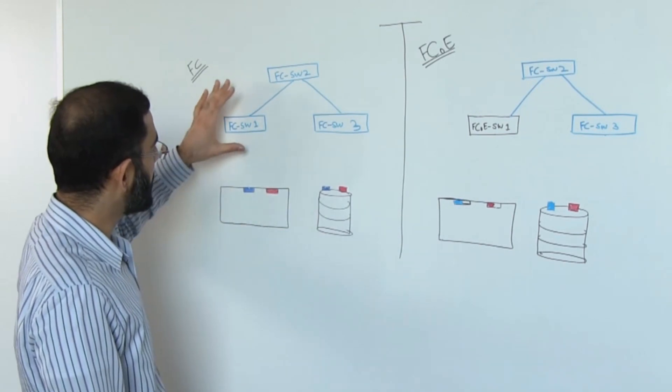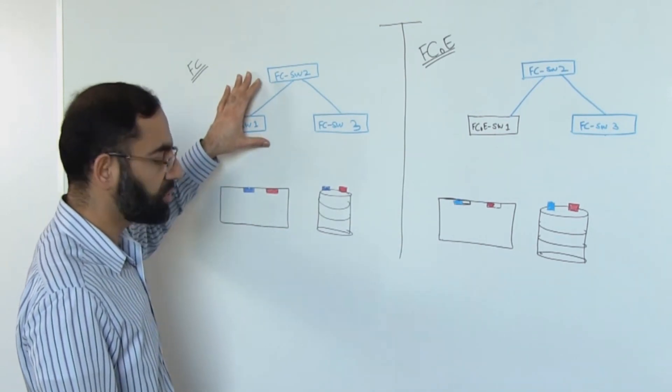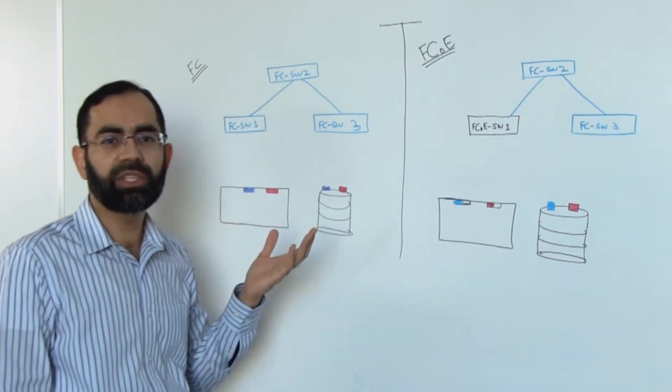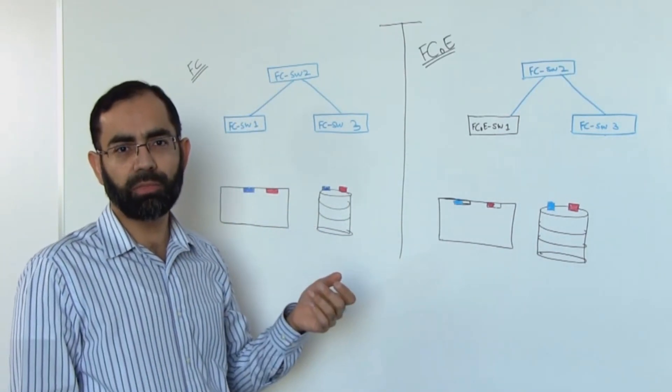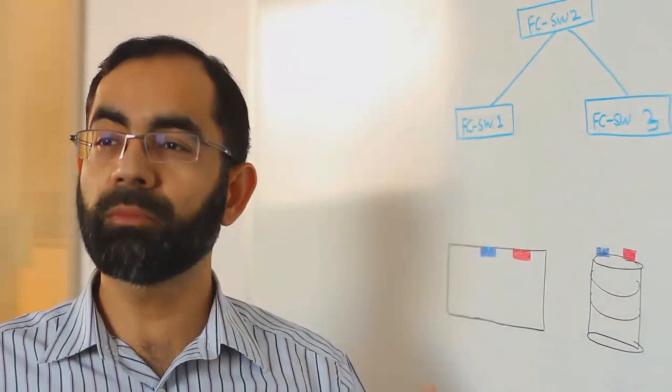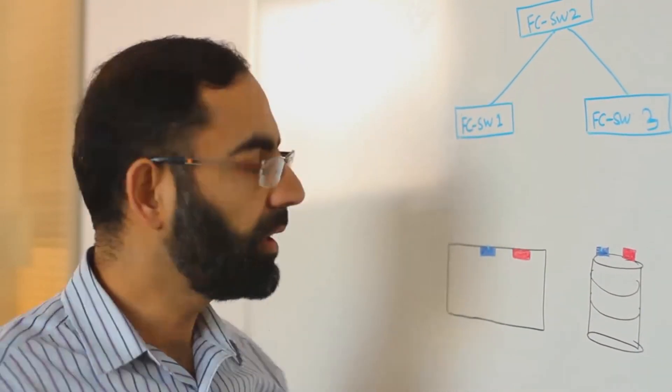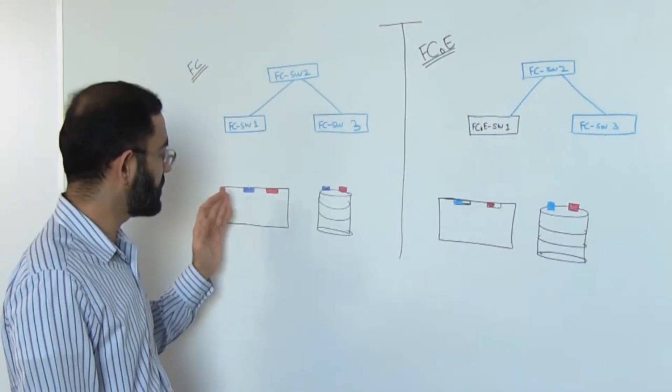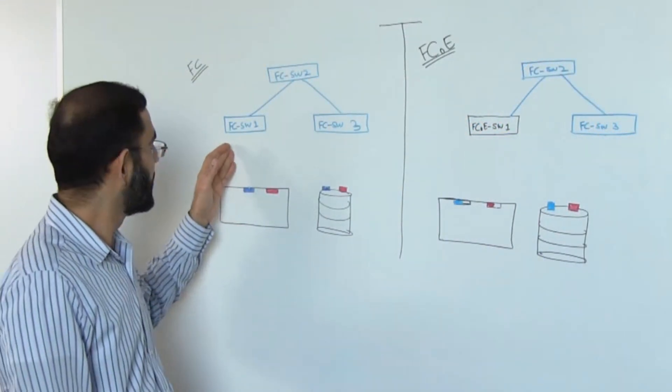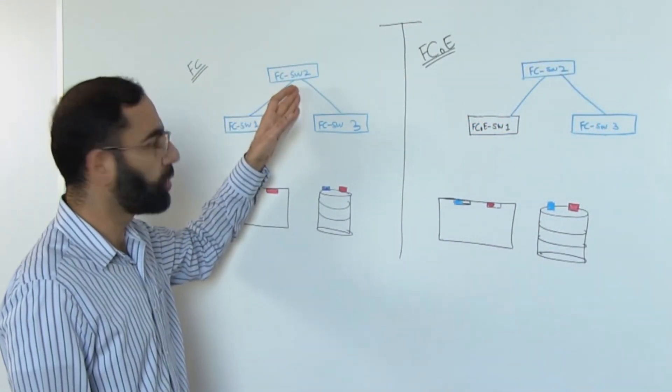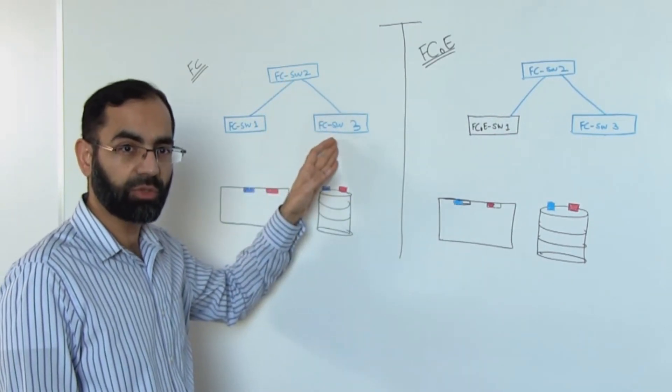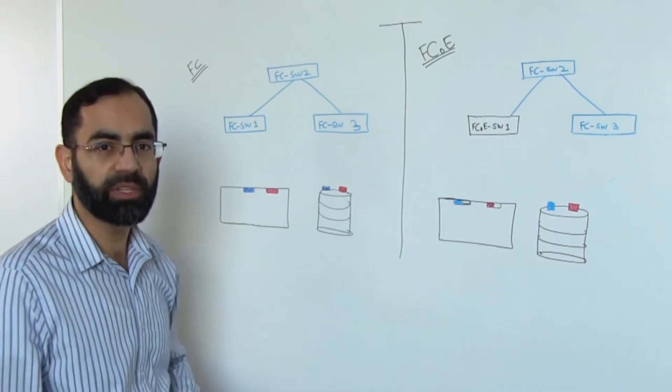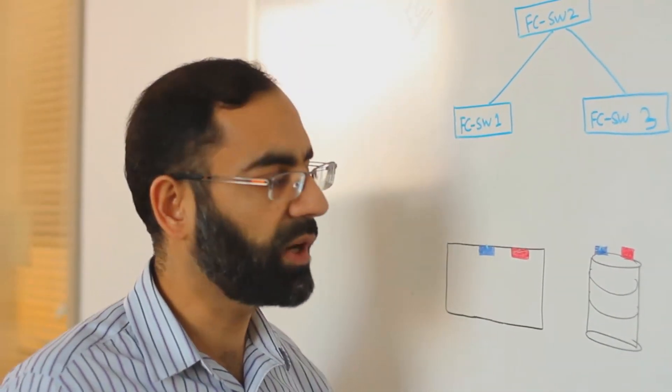I've shown three switches here intentionally because in a typical FC environment, three-tiered architecture is very common. By three-tiered architecture, servers connect to one of the edge switches. The edge switch then connects to a core switch, and then the core switch connects to a different edge switch where all of the storage is connected. This is a fairly common deployment type in FC environments.